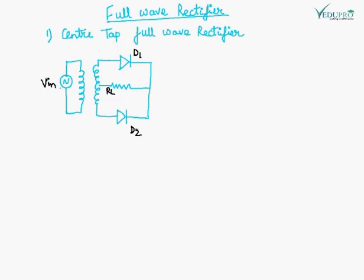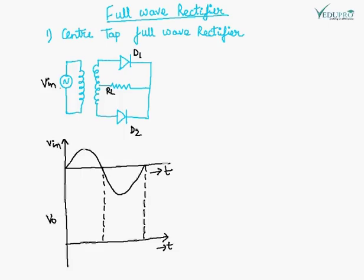This is the circuit diagram of a center tap full wave rectifier. The name comes from the use of a center tap transformer. The input is AC. There are two diodes, D1 and D2, and the center tap of the transformer is connected to the load. The waveform shown here is of the input voltage. We will try to find out what output voltage we get across the load, measured at this point.